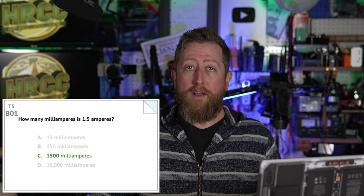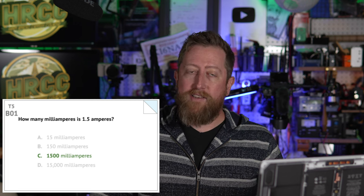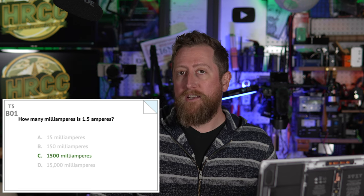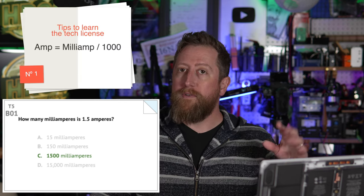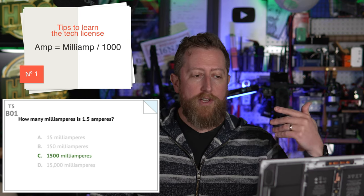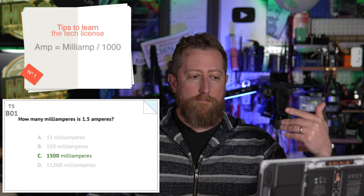Section B is electrical principles — math for electronics, conversion of electrical units, and decibels. Bravo 01: how many milliamperes is 1.5 amperes? The answer is 1500 milliamperes. This is a movement of the decimal point. When you use that to move around, that is going to change how you name the measurement. In this case, milliamps.